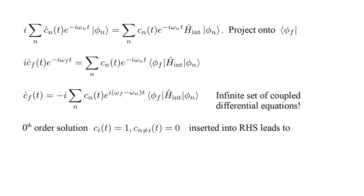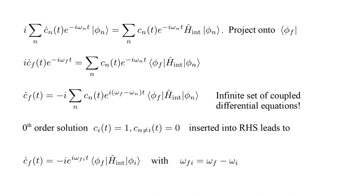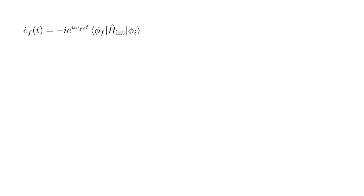Now back to our quantum mechanical problem. Let's take as our zeroth-order solution the i-th stationary state of the unperturbed problem. This is described by C i of T equal to 1, and all the other coefficients equal to 0. We plug this into the right-hand side of the above equation, to get C dot F of T equals minus i, e to the i omega F i T times the F i matrix element. Here, omega F i is omega F minus omega i.